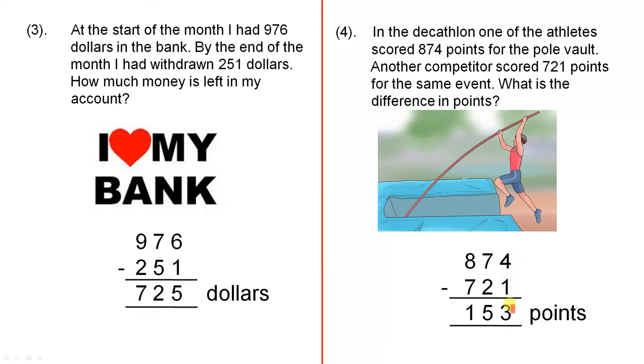4 take away 1 is 3, 7 take away 2 is 5, and 8 take away 7 is 1. So the difference is 153 points. So this video has shown how to do subtraction using 3 columns: the ones column, the tens column, and the hundreds column.